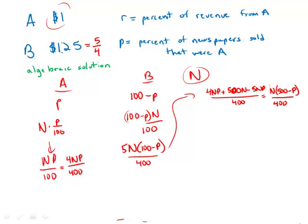And the revenue from A is the part, and we want the percent. So percent, of course, is part over whole times 100.